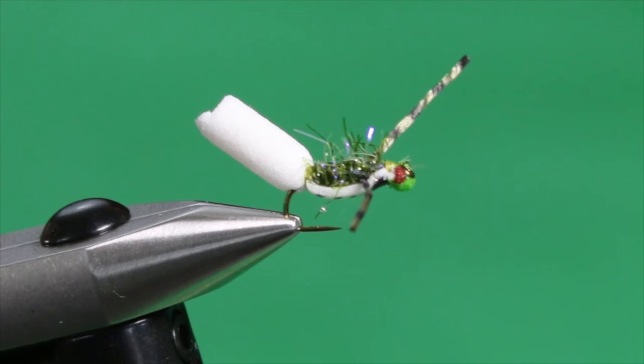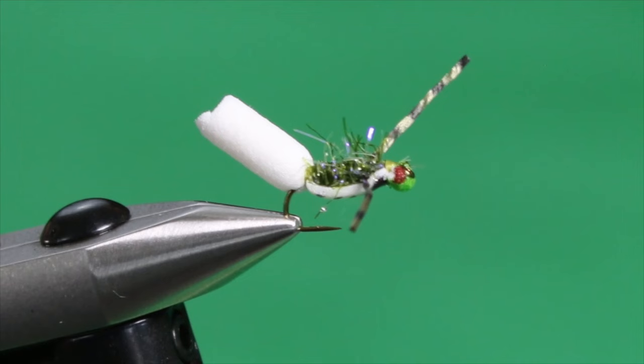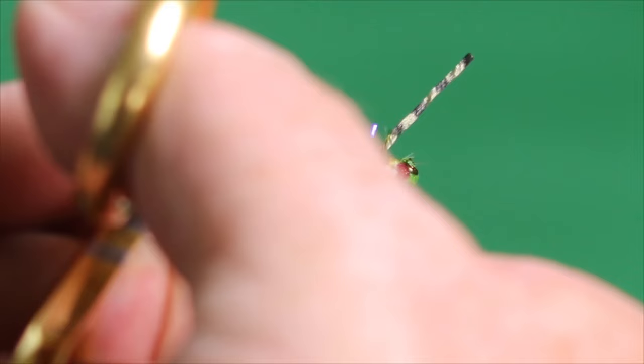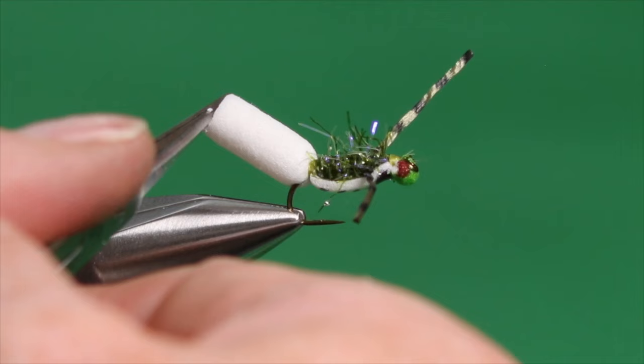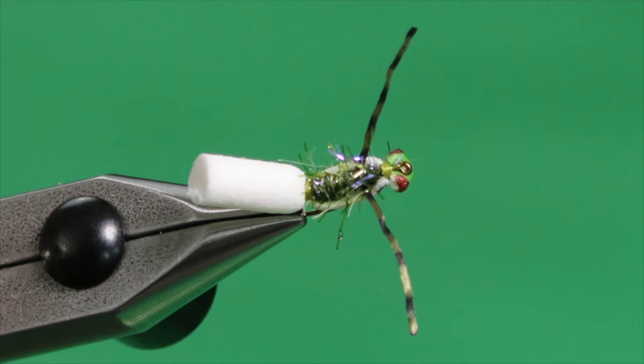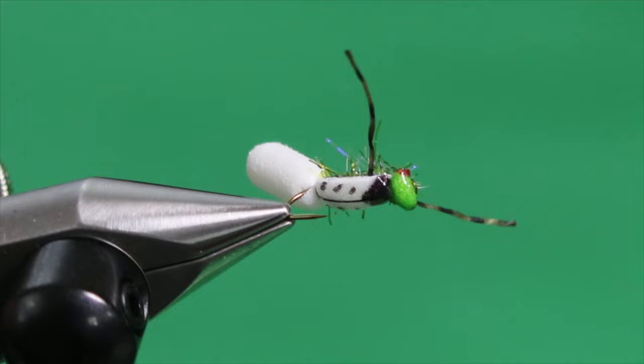When these back swimmers suspend on the surface, they suspend with their white backs facing down to the bottom of the lake. And that allows them to blend in with the surface glare. And when you look at them from above, their dark olive body blends in with the olive background of the lake, the lake water below.